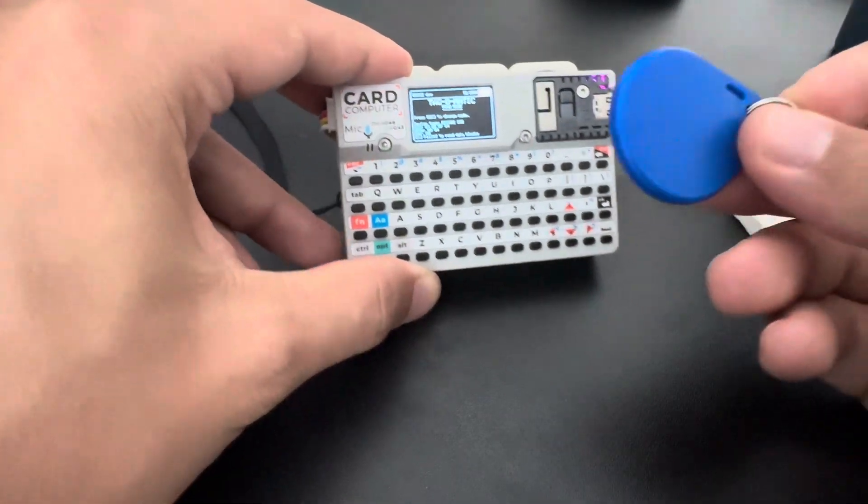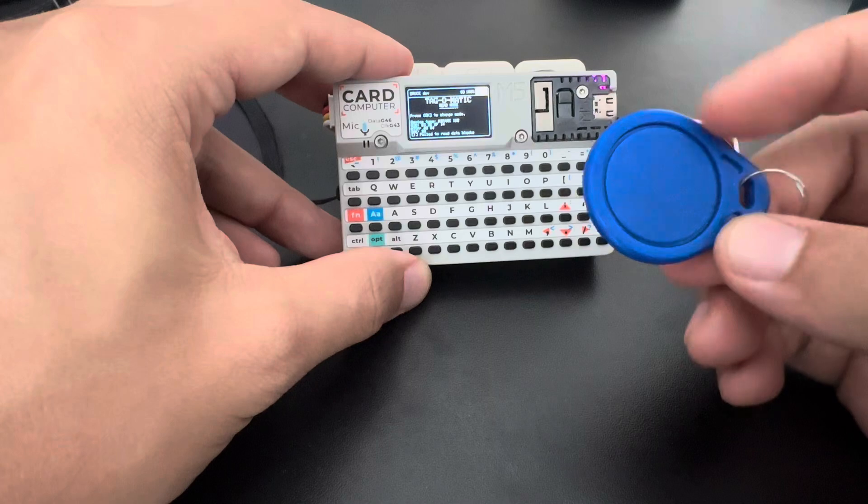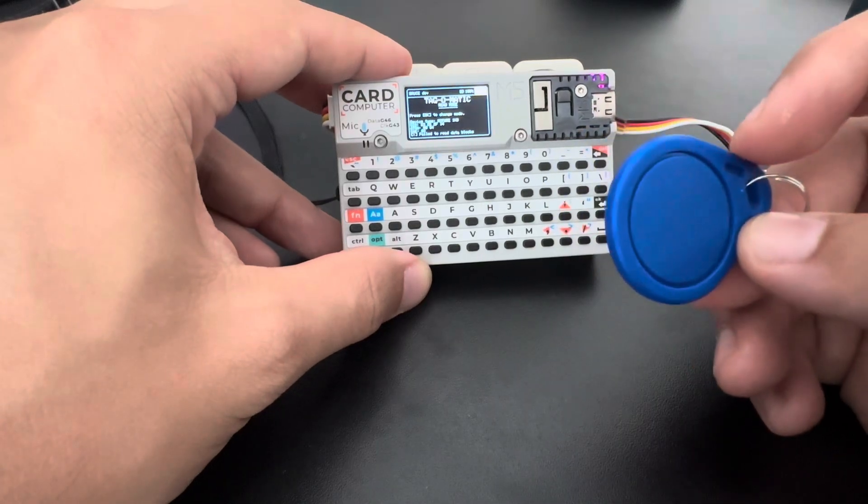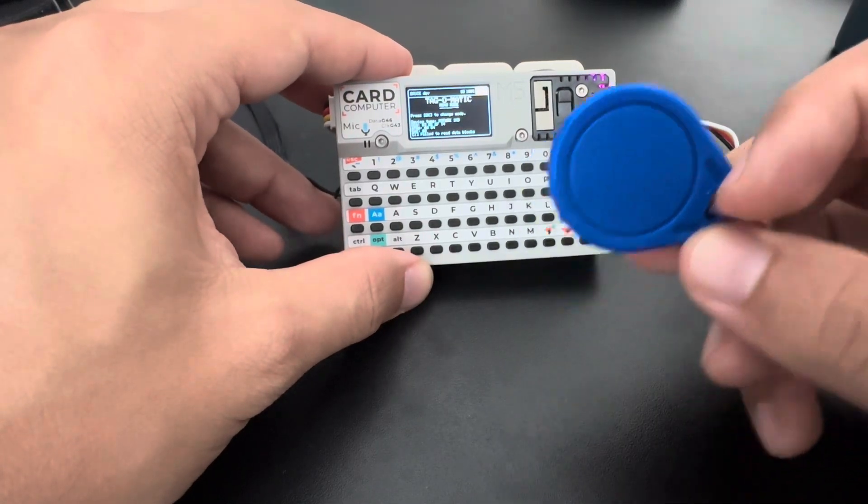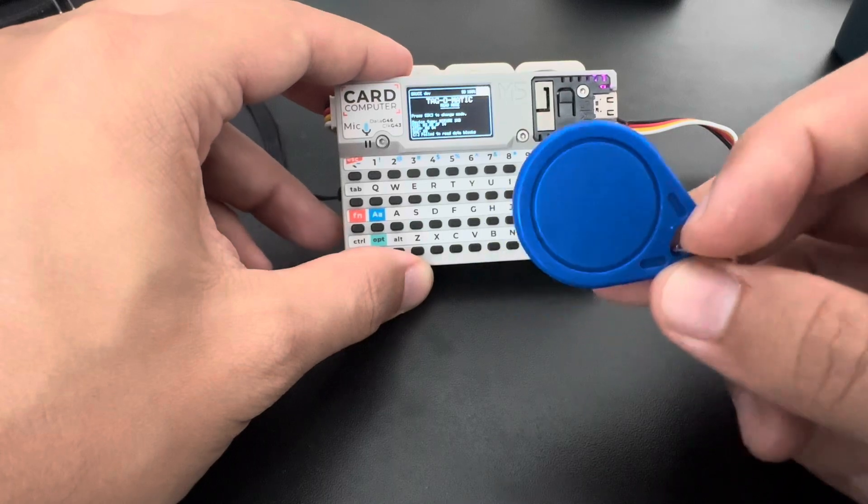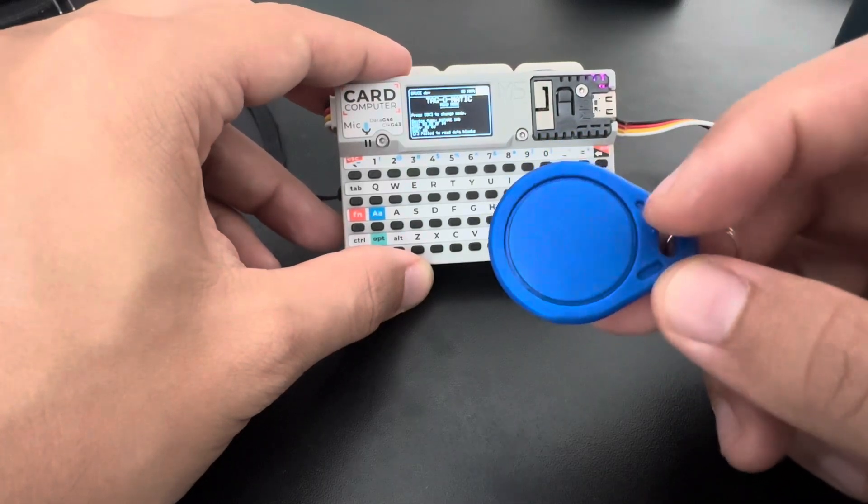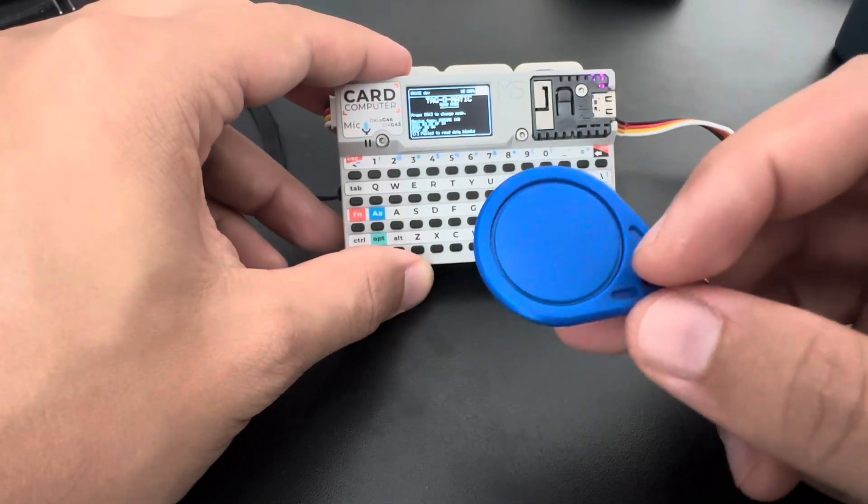That's how we clone a tag. But usually those tags are blocked. The block zero is not writable, so you cannot write another UID into this tag.